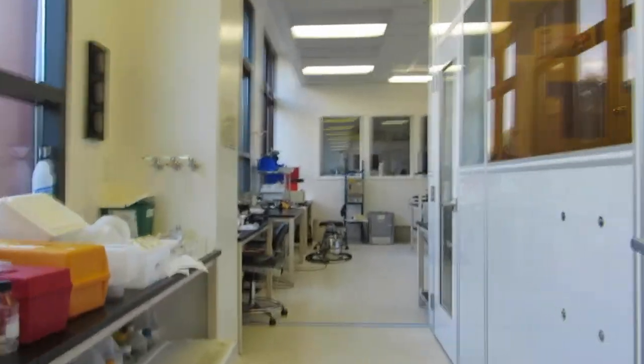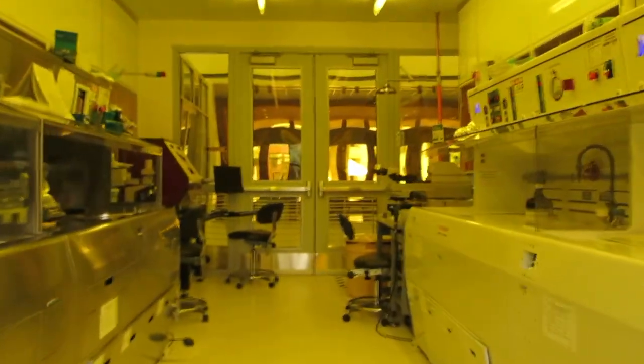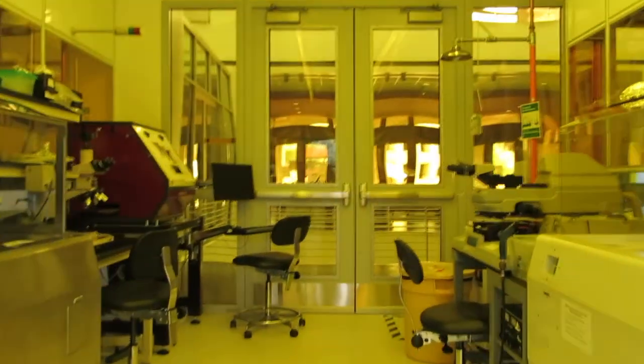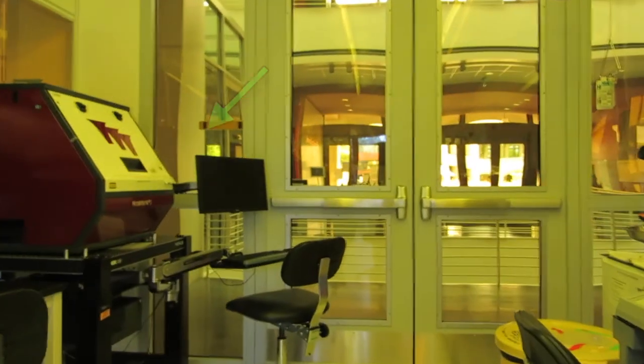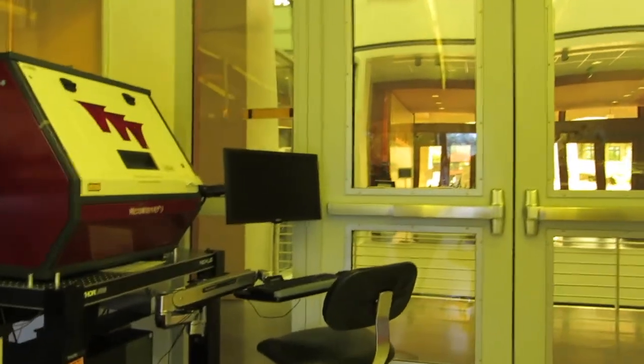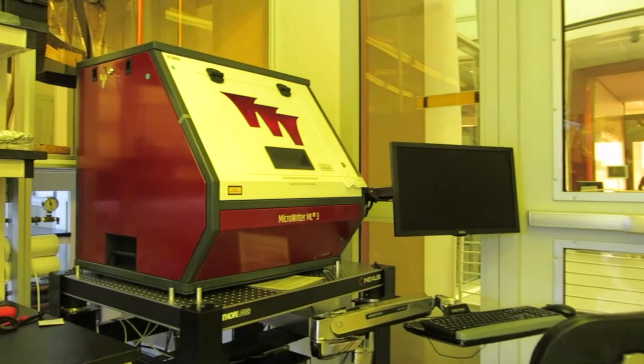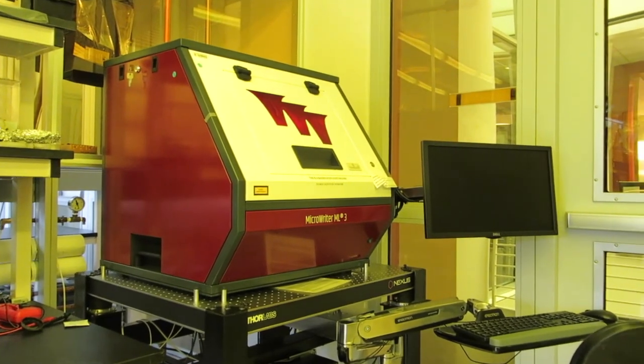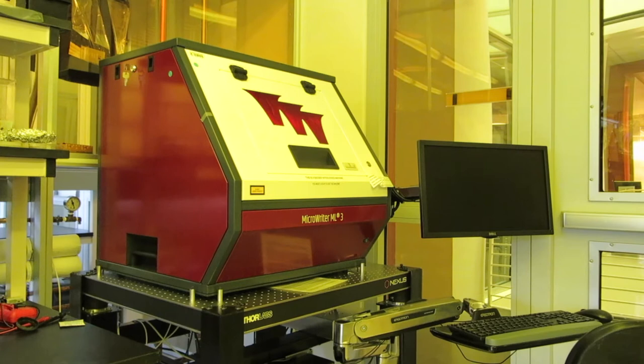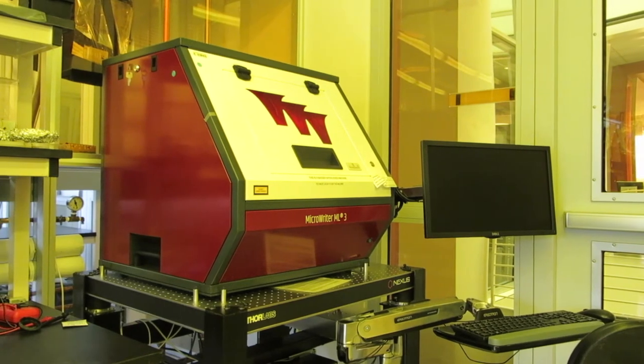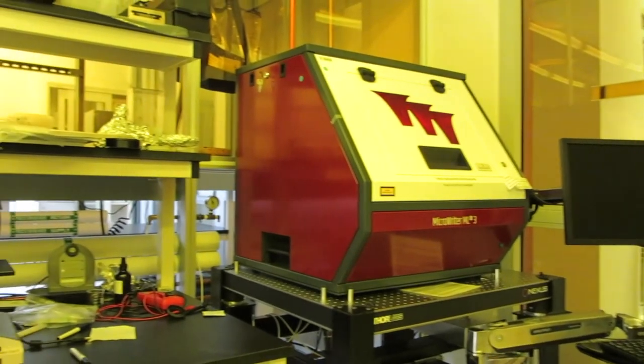Now let's head back to the yellow room. This is the ML3 direct write machine. This is a maskless way of exposing patterns into resist. You design the pattern using a mask design software such as Clewin and then it writes that pattern directly onto the resist.